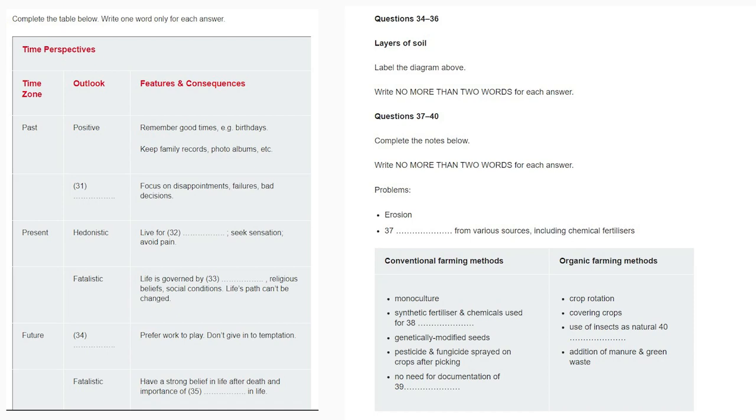In fact, all agricultural inputs are evaluated for their long-term effects on the environment, regardless of whether they are synthetic or natural. To sum up, organic farming is the only sustainable way of feeding the people on this planet, and keeping both the planet and the people in good health. That is the end of Section 4. You now have half a minute to check your answers. You now have 10 minutes to transfer your answers to the Listening Answer Sheet.